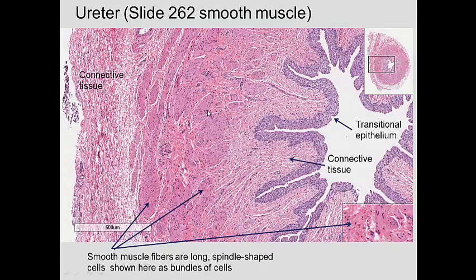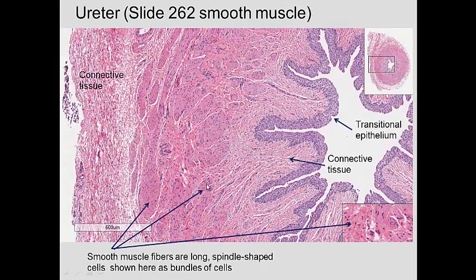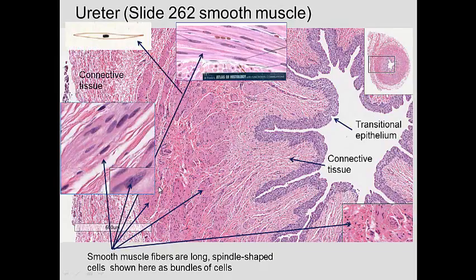If we look at the ureter, which has lots of smooth muscle, we can see bundles of smooth muscle all around. It is a little darker than the connective tissue seen underneath the epithelium, which is a transitional epithelium. There's connective tissue below and on the outside, with fibroblasts and bundles of collagen, which stain lighter than the smooth muscle. At higher magnification, you can see individual smooth muscle cells and their nuclei — these are multiple cells, and they are non-striated.